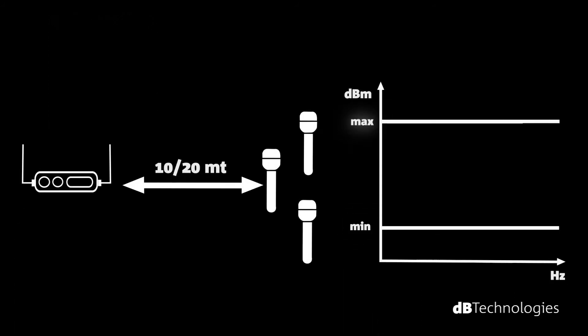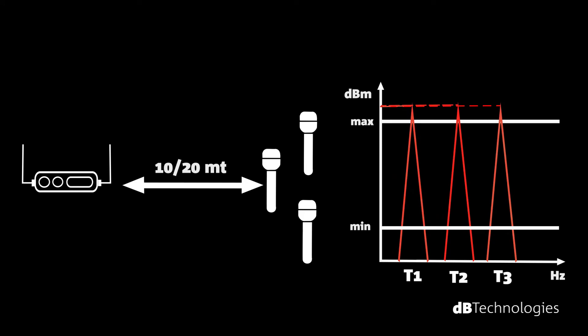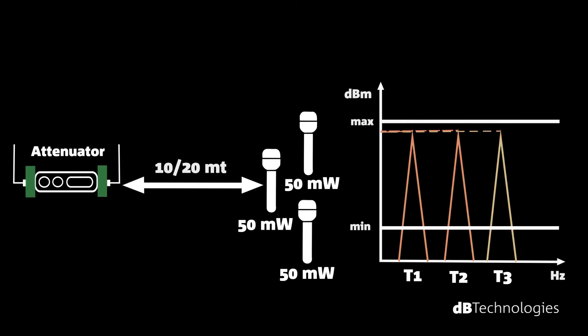In case of many transmitters in the same system, if they are all set at high power, then the receiver may saturate. Therefore, I recommend using reduced power levels or, as in the previous case, resort to an attenuator.